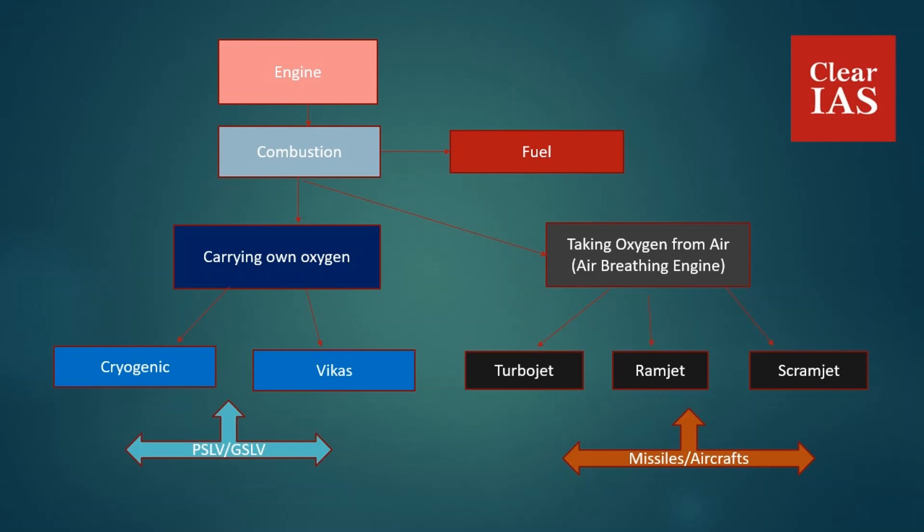Above 100 kilometers you can use powerful engines like cryogenic or Vikas. Cryogenic means very low temperature — at very low temperature, gases are liquefied. In a cryogenic engine, either the oxidizer (oxygen) or the fuel is liquefied. Cryogenic and Vikas engines are used in PSLV and GSLV because they have to go until space where you can't get oxygen, so air-breathing engines cannot be used there.